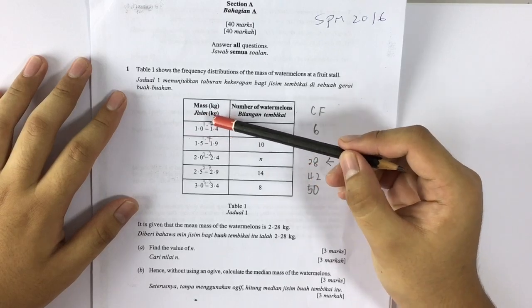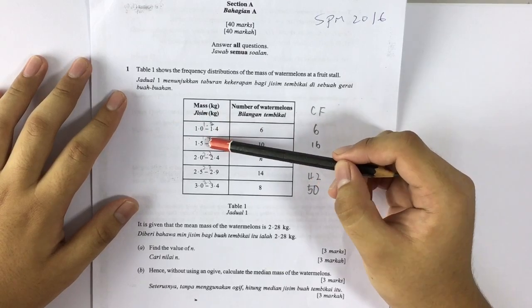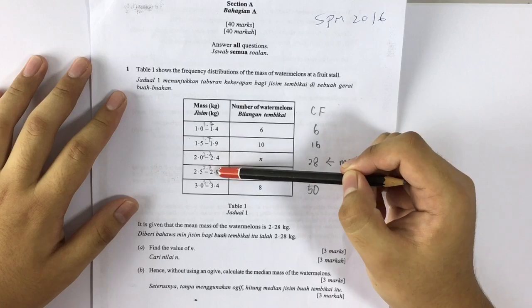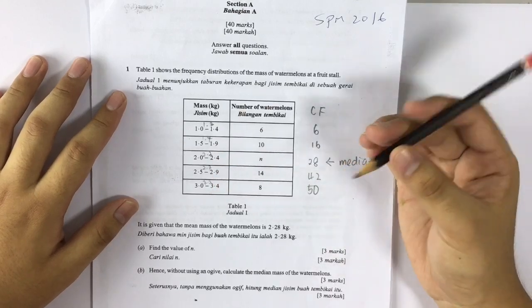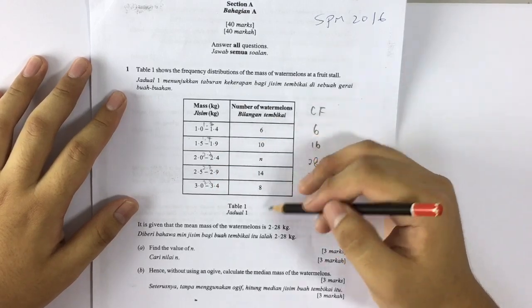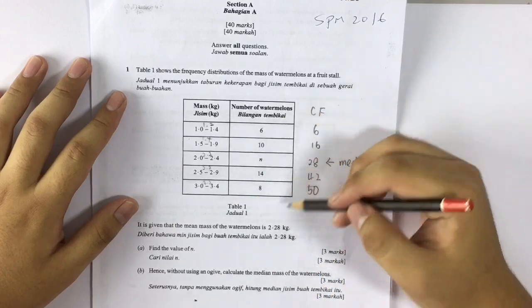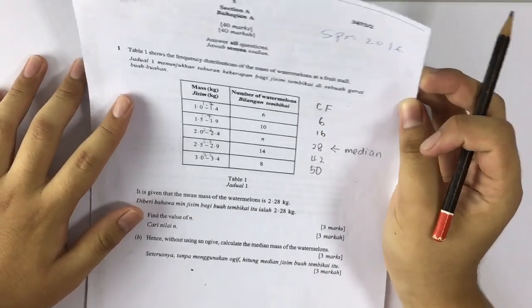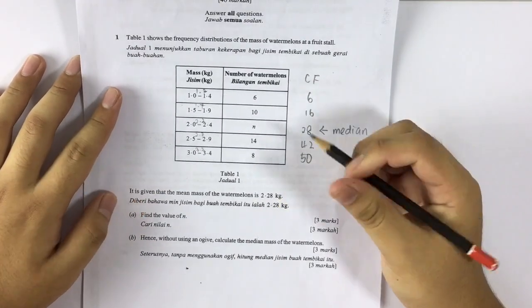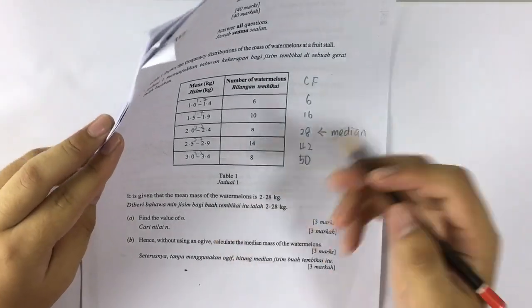So 1.0 to 1.4, midpoint is 1.2, then 1.7, 2.2, 2.7 and 3.2. We've got to times it with this and then divide by total frequency equals 2.8, only then we can find the value of n. So what do we do? The first thing...